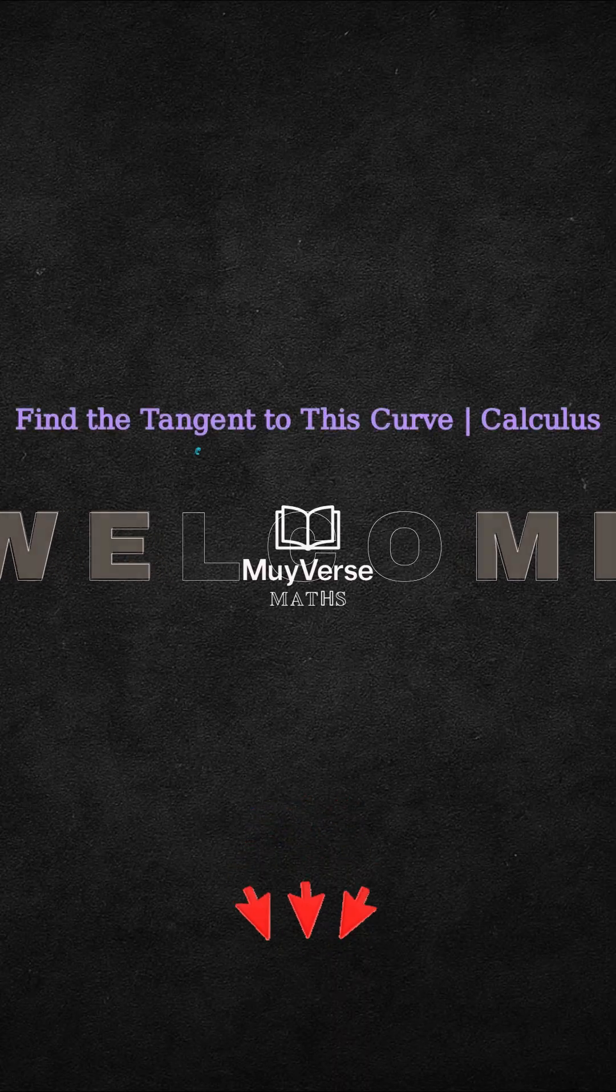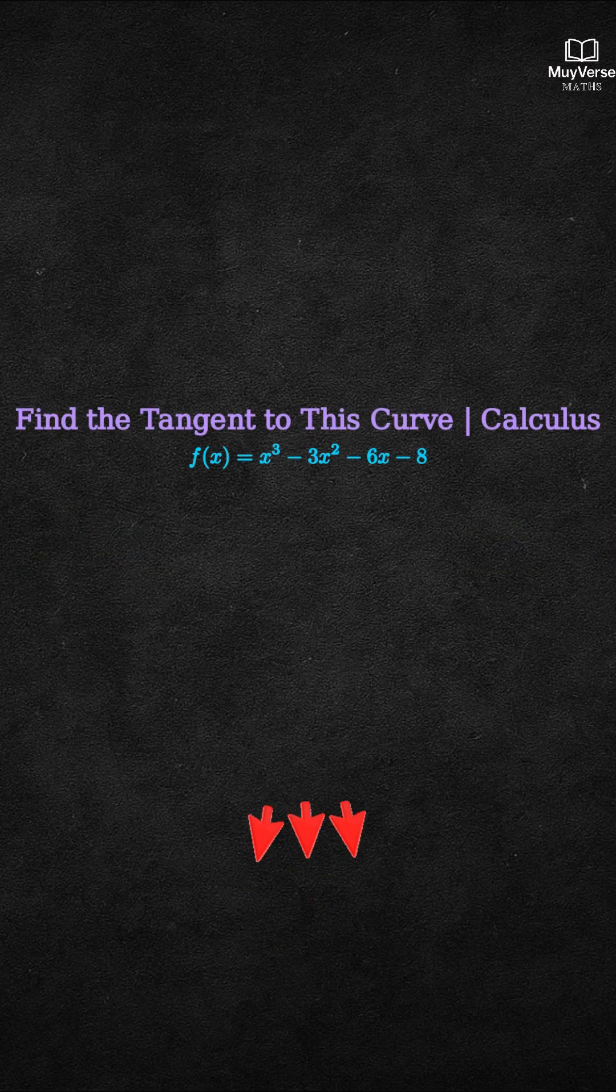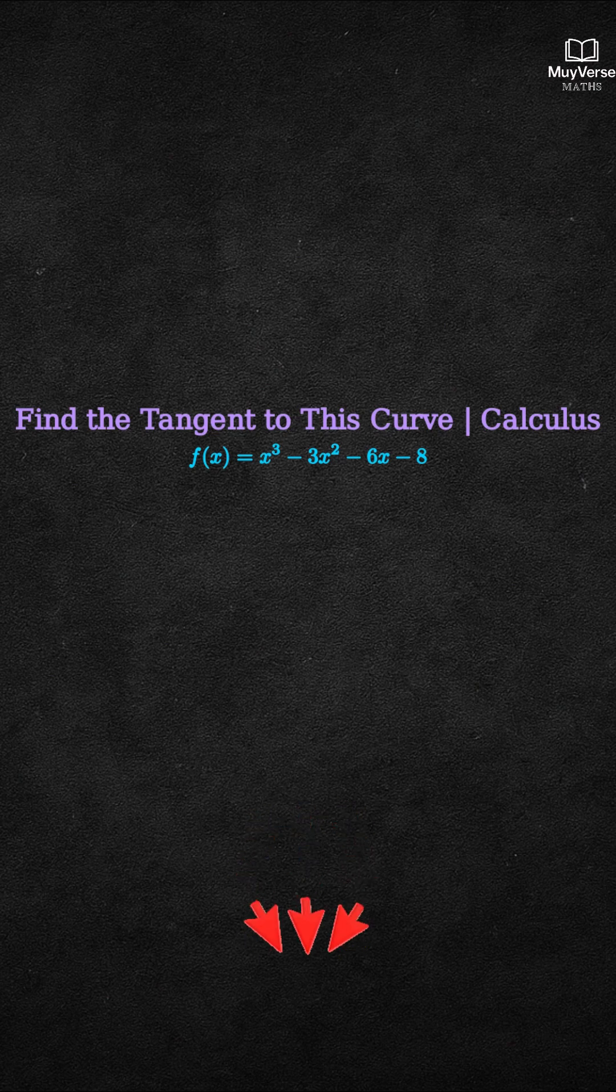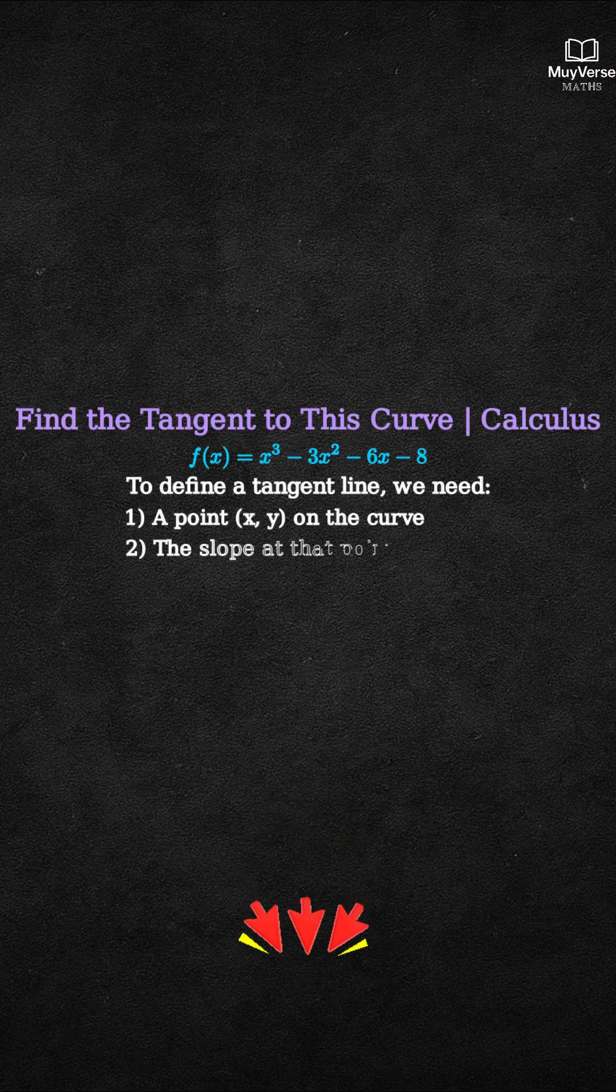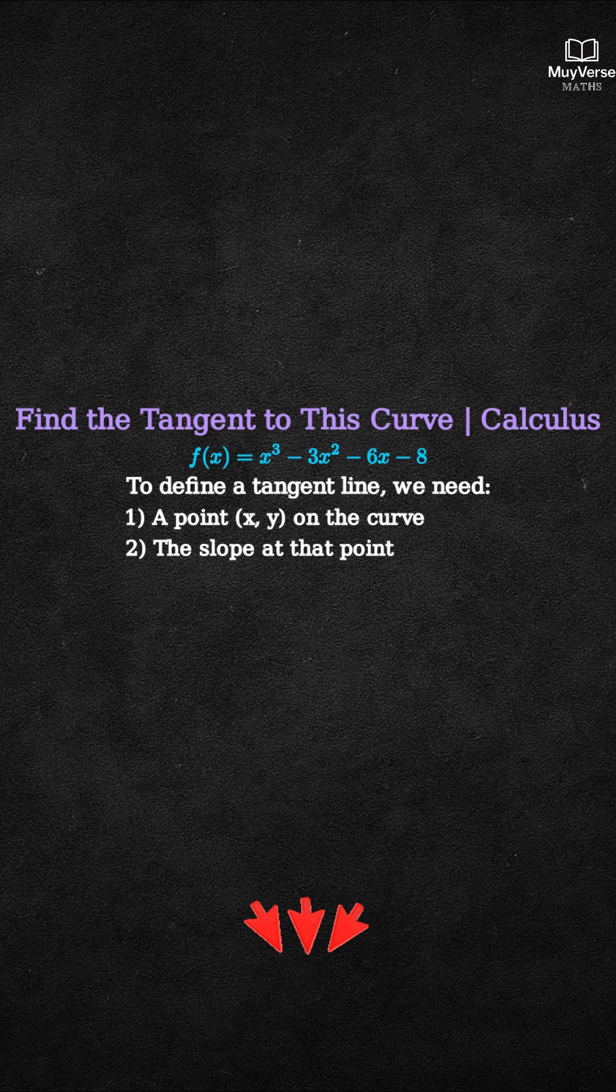Find the tangent to this curve, f(x) equals x cubed minus 3x squared minus 6x minus 8. To write the equation of a tangent line, we need two ingredients: a point on the curve and the slope at that point. We'll build a general formula at x equals a, and then do a quick example at x equals 0.